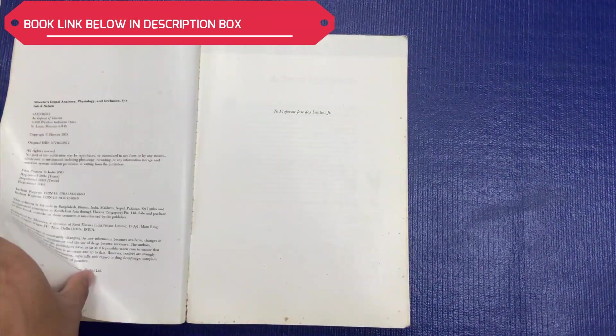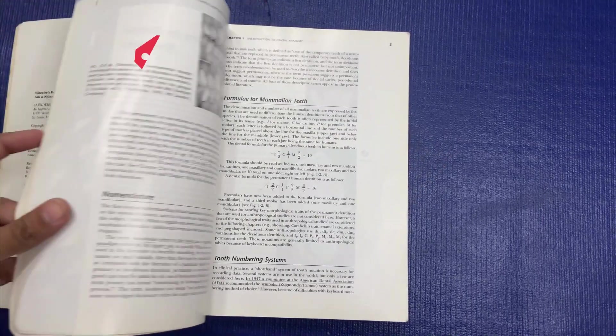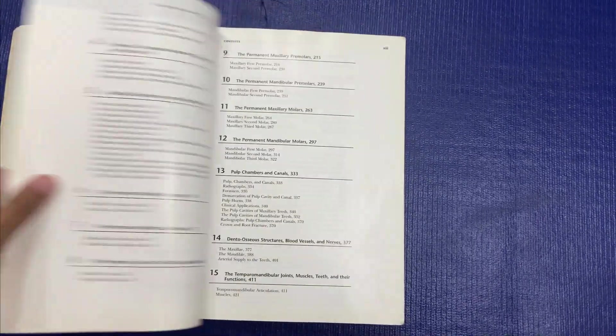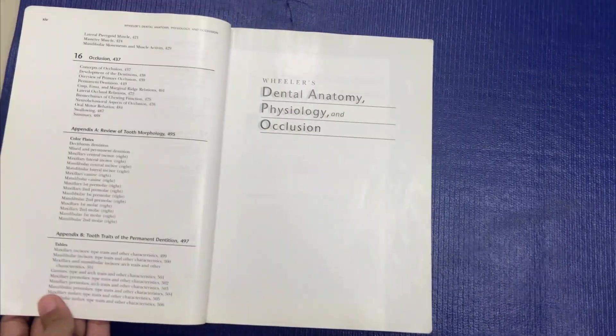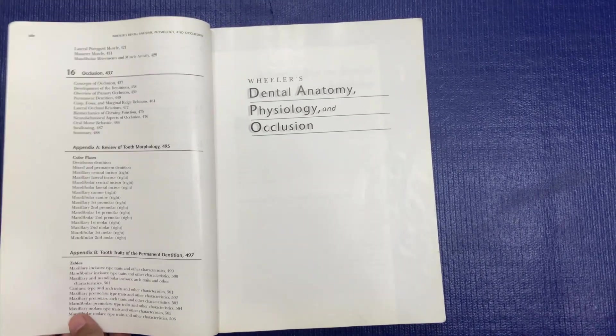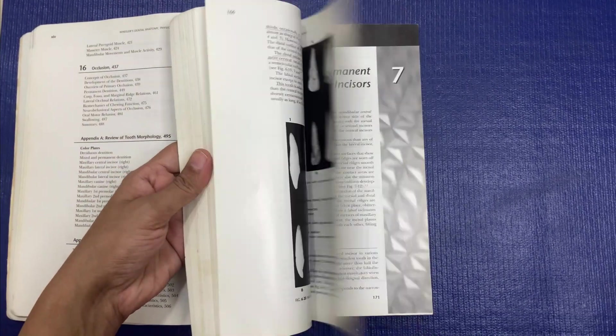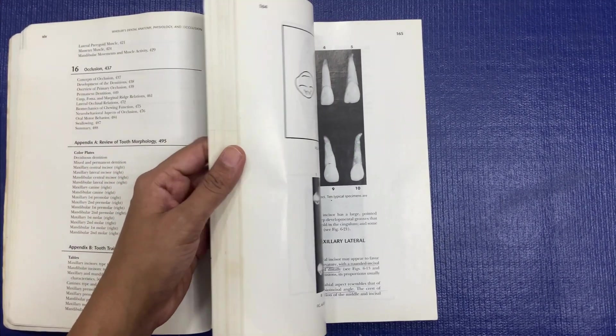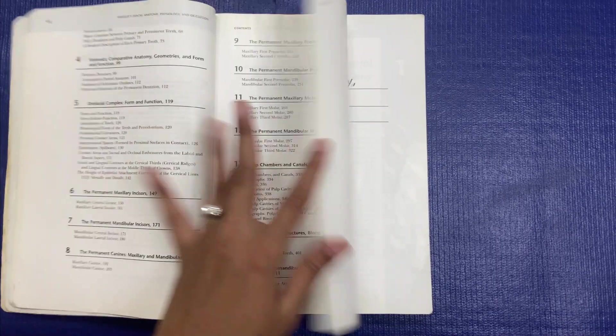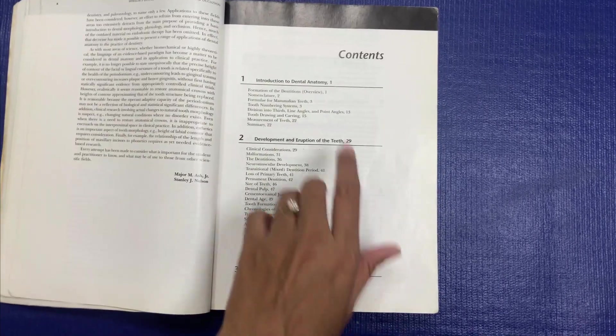This is the book and in this there are 16 chapters. Mine is an older version so the images are black and white, but in the newer version the images are colored, so you can definitely go for this book.